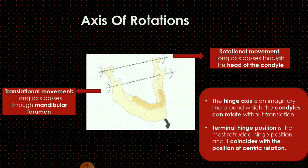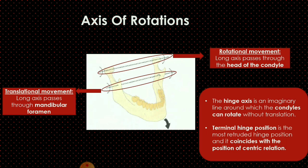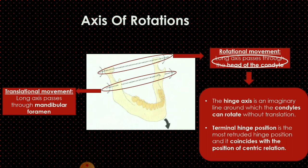Since rotation and translation are different movements, their axes of rotation are different too. In rotational movement of the condyle, the long axis passes through the head of the condyle. In translational movement — when the condyle moves downward and forward — the long axis passes through the mandibular foramen. Focusing on rotational movement, the long axis passing through the head of the condyle is called the hinge axis. Hinge axis is defined as an imaginary line around which the condyle can rotate without translation. Whenever the condyle translates, that axis is not called the hinge axis.